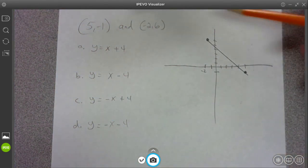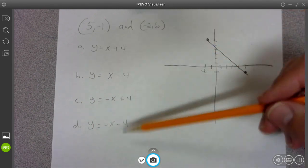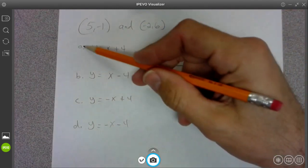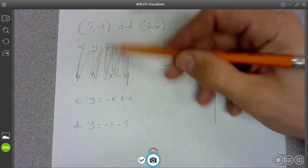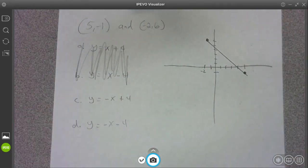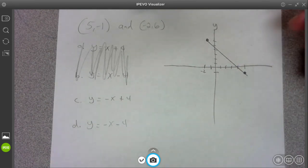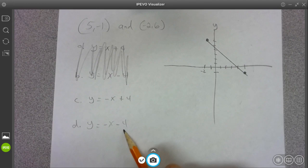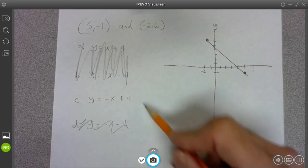If I draw the line, I can tell just by looking at these options which one it is. I know it's got a negative slope, so it can't be either of those two. It's got to have a negative slope. And the y-intercept is positive. It's positive four. So it's not this one, because that's negative four. That's it.